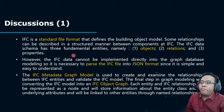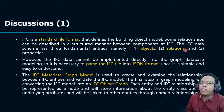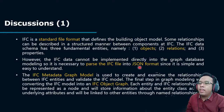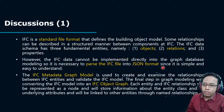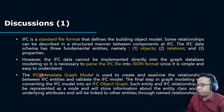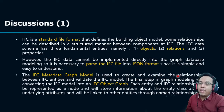IFC is a standard file format that defines the building object model. Some relationships can be described in a structured manner between components in IFC. The IFC data schema has three fundamental entities: object, relations, and properties. However, IFC data cannot be implemented directly into graph database modeling, so it is necessary to parse the IFC file into JSON format since it is simple and easy to understand. The IFC metadata graph model is used to create and examine the relationship between IFC entities and validate the IFC model.